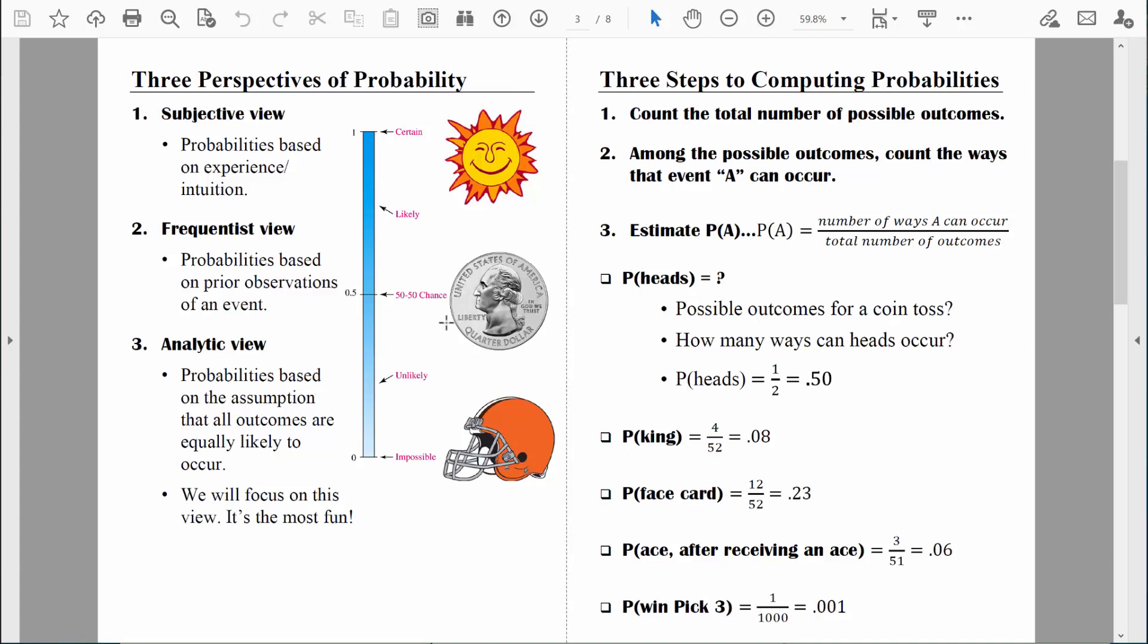Imagine this coin right here. Imagine that I ask you to compute the probability that when we flip that coin, it's going to end up being a heads as opposed to a tails. If you were a strong supporter of the frequentist view, you would start flipping that coin. One after another, after another, after another, you would start flipping that coin. In other words, you would start collecting data.